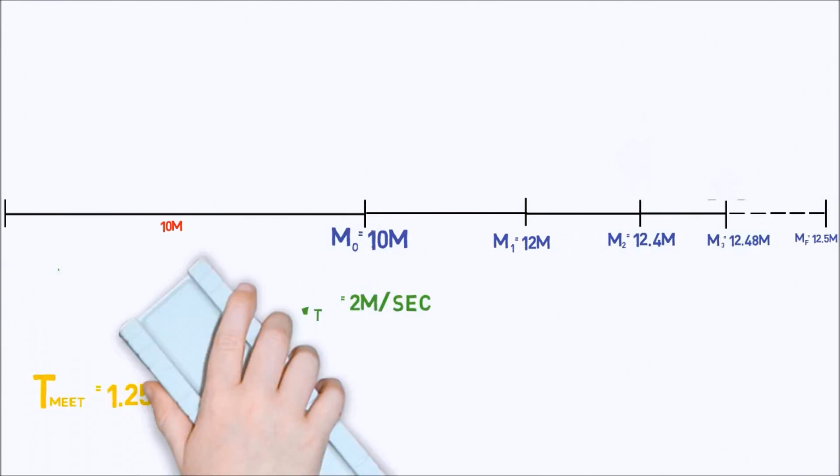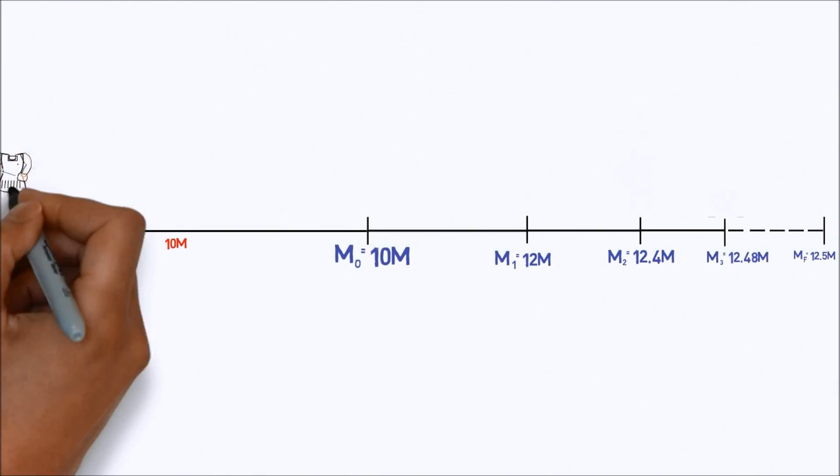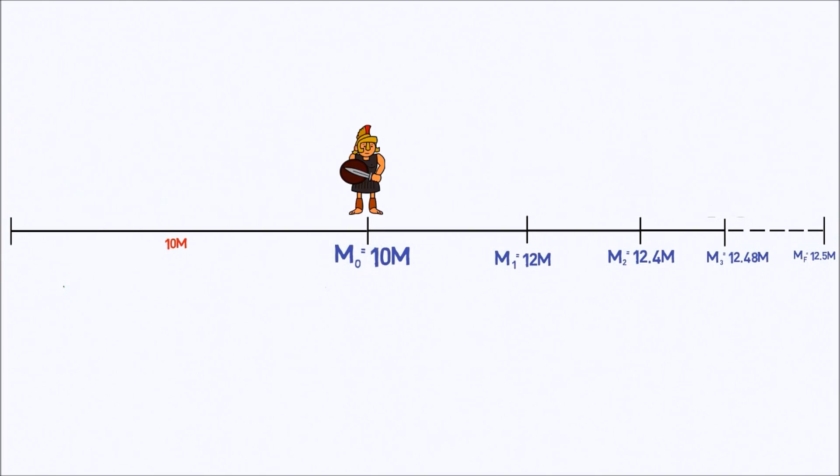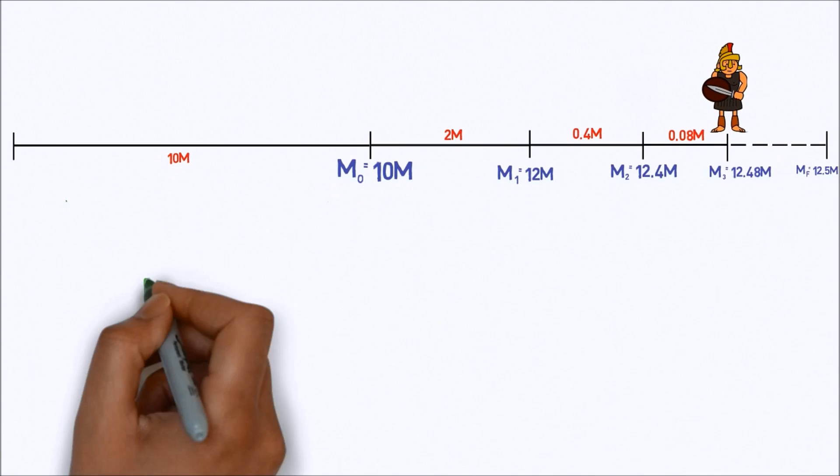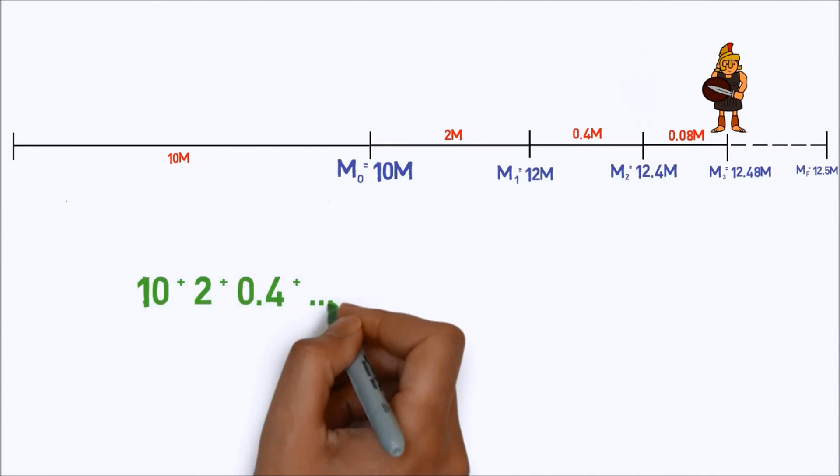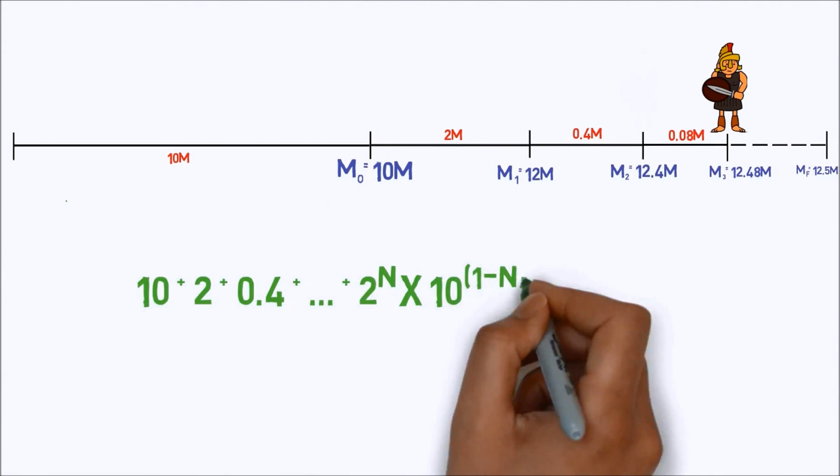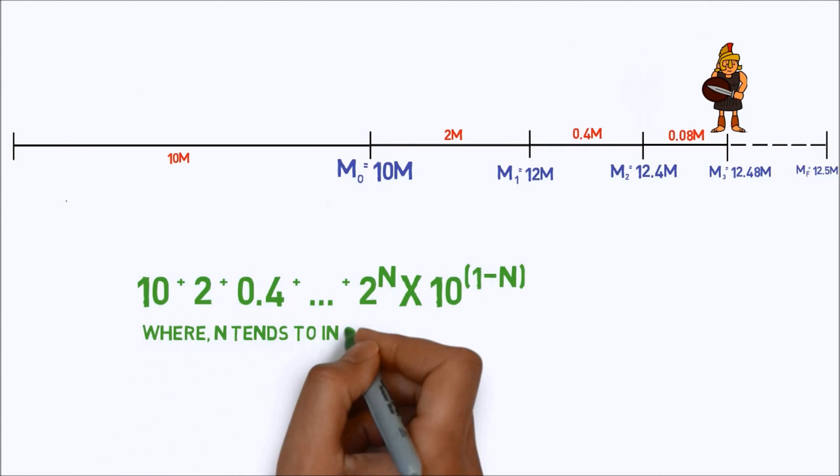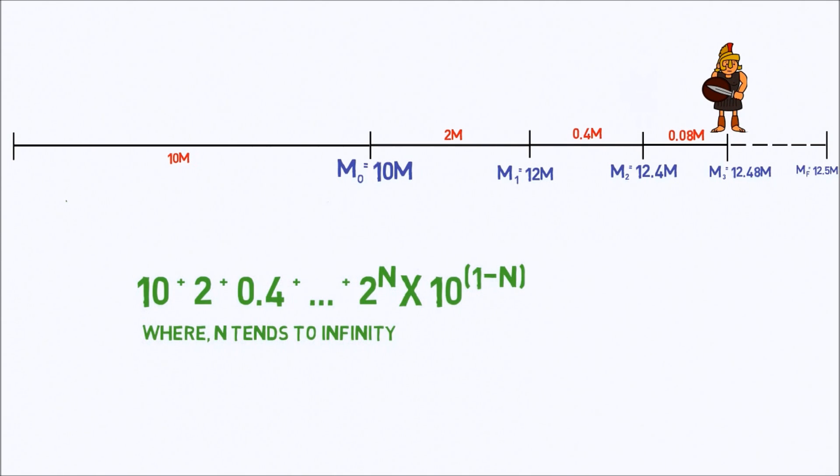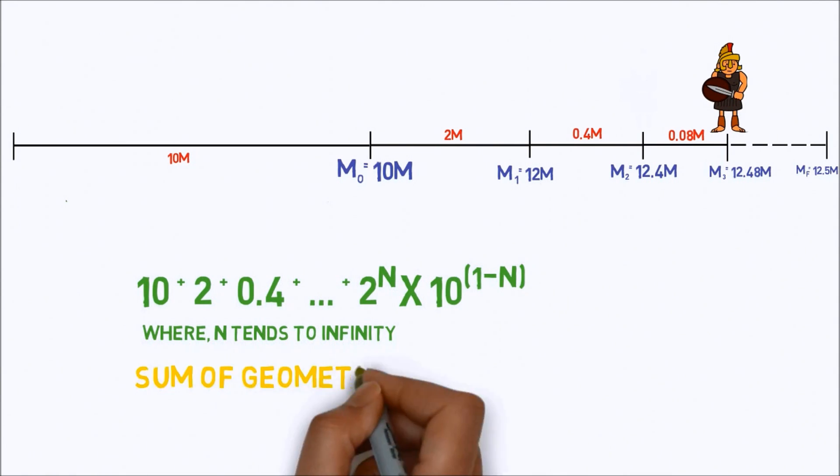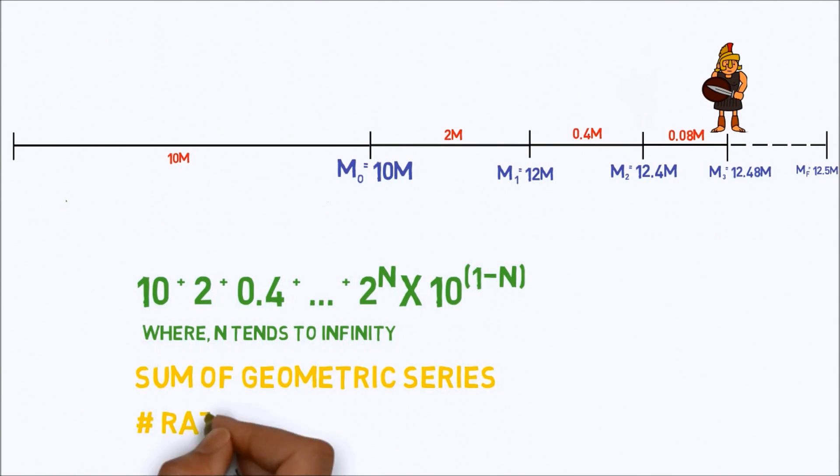If you think of the distances Achilles has to travel, first 10 meters to M0, then 2 meters to M1, then 0.4 meters to M2, and so on, we can write it as a sum of a geometric series like this. Now, it is a little clearer. As the distance that Achilles travels to catch the tortoise is the sum of a geometric series where the multiplier is less than 1, we know that the distance is finite as the series converges.